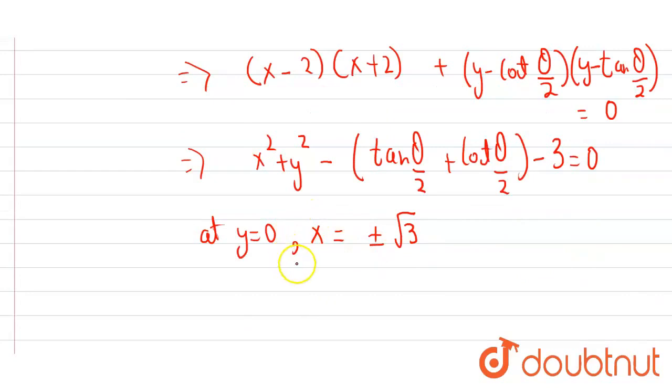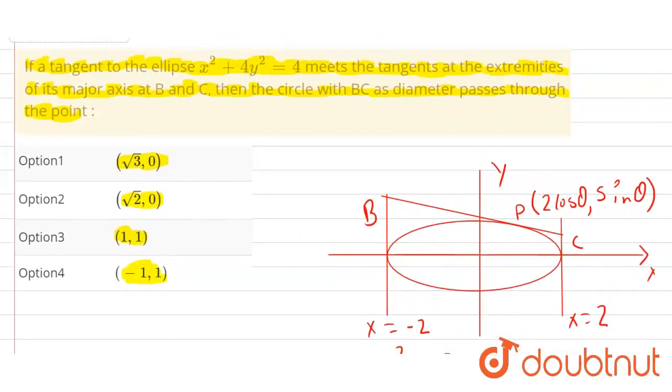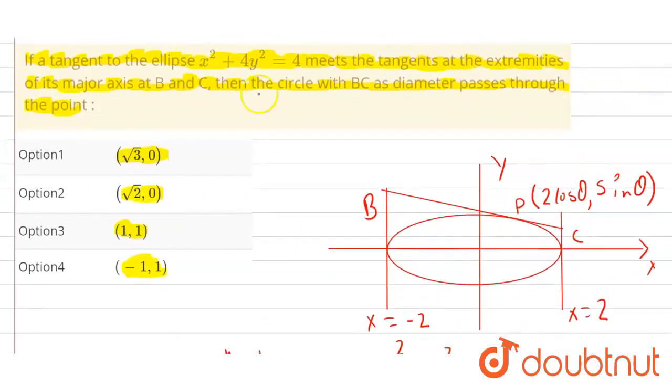Therefore, we have found the points through which the circle passes. The points are plus minus under root 3, comma 0. This is our answer. If we look at the options, option 1, with the value under root 3, comma 0 is our answer. Thank you.